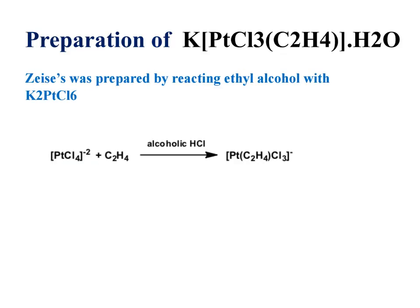Zeise's salt was prepared by refluxing ethyl alcohol with K2PtCl6. After refluxing, addition of KCl solution gives light yellow color crystals of Zeise's salt.